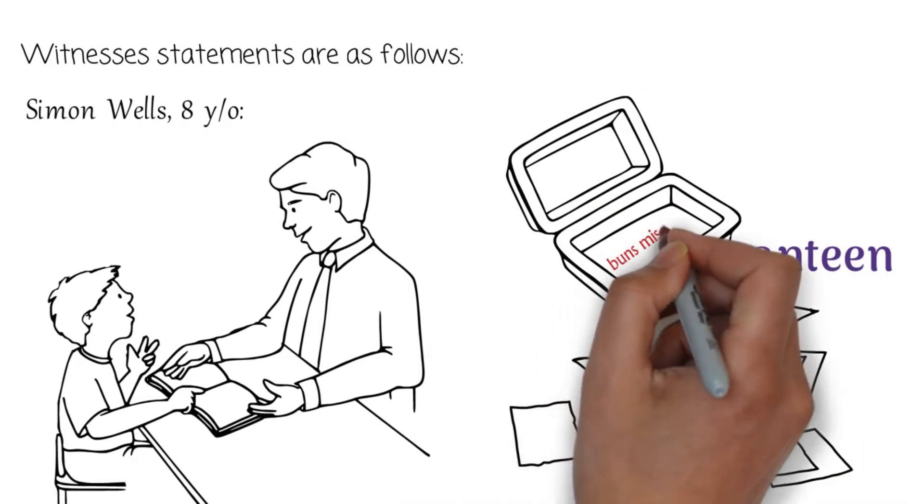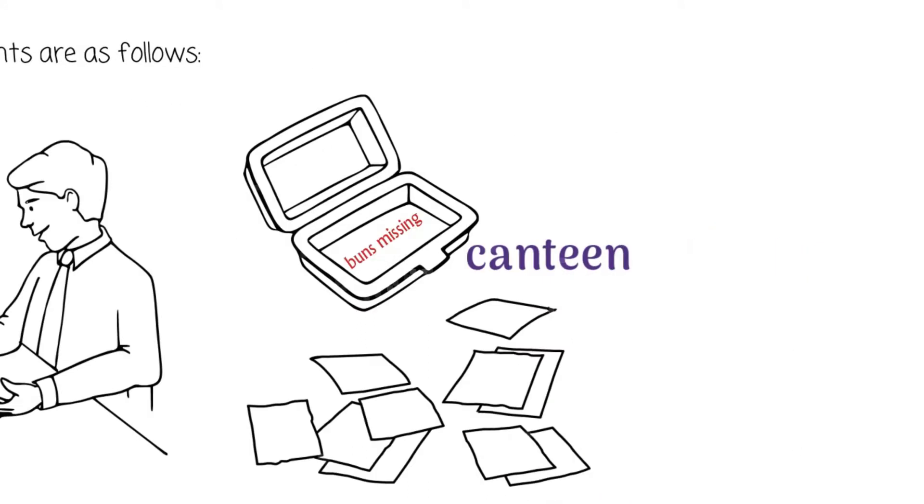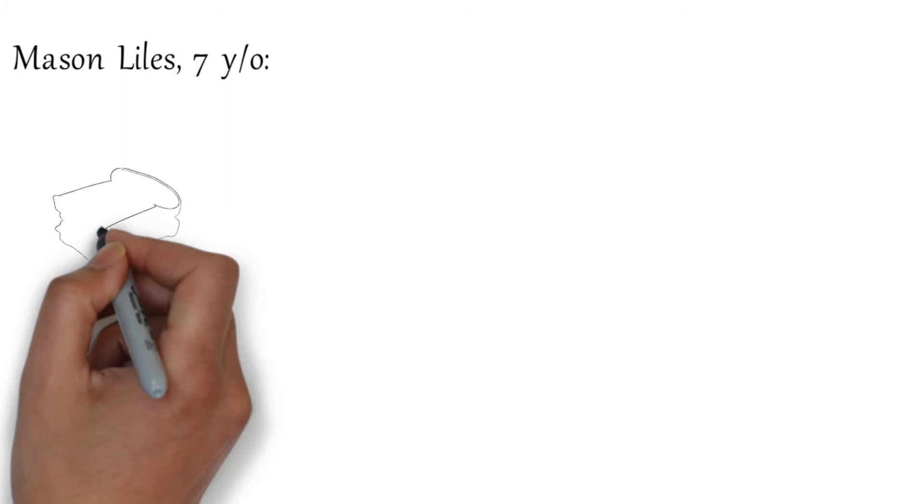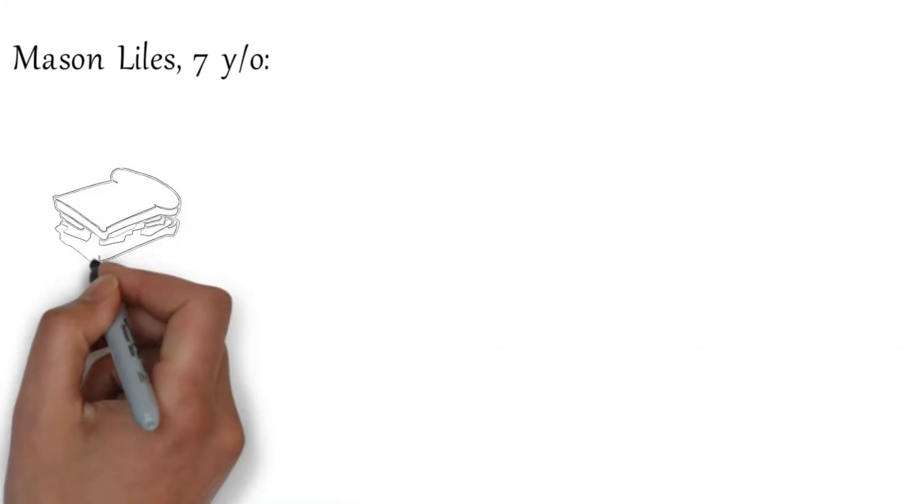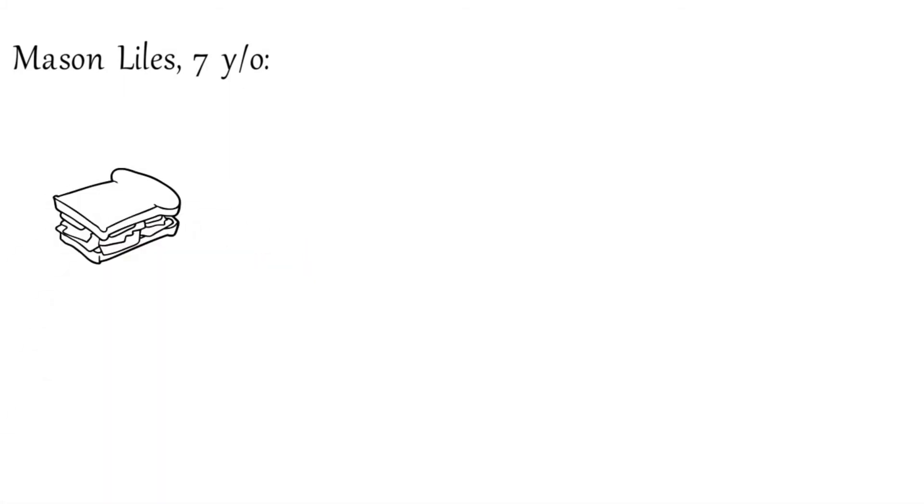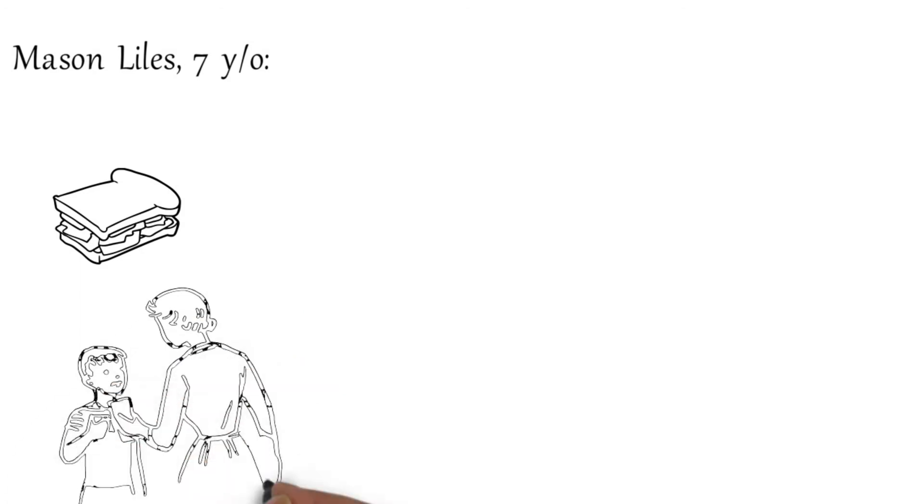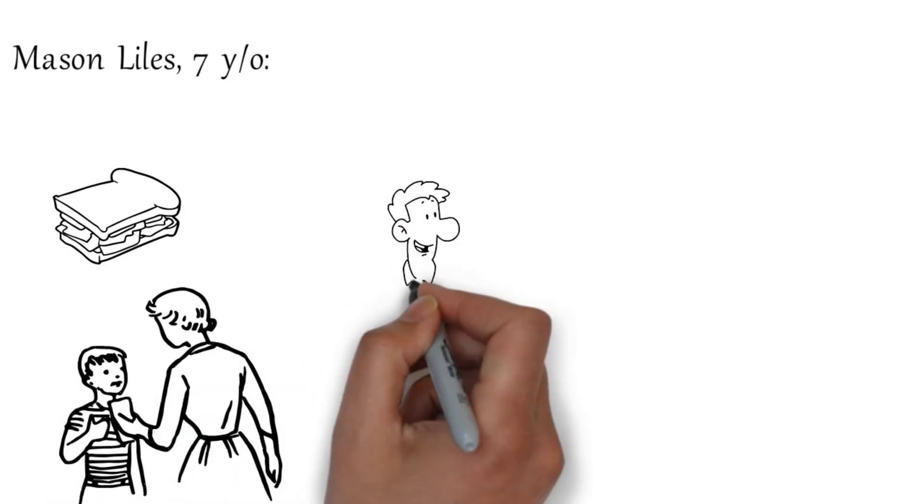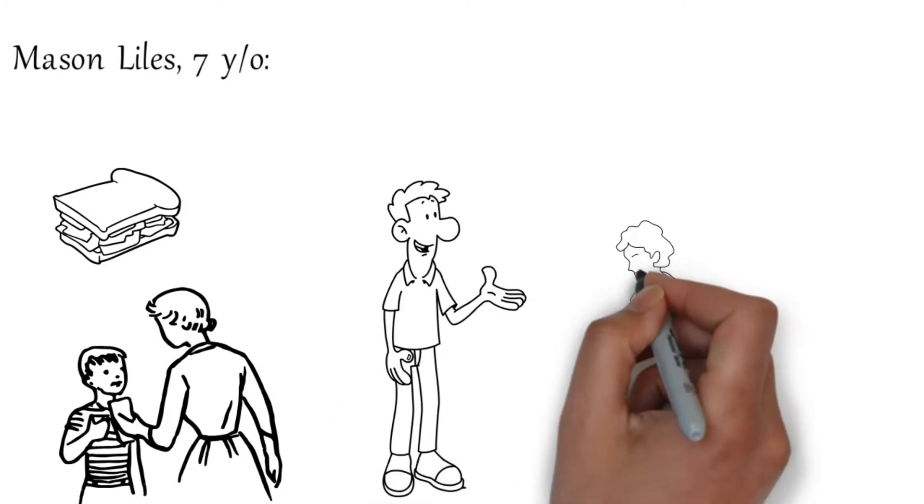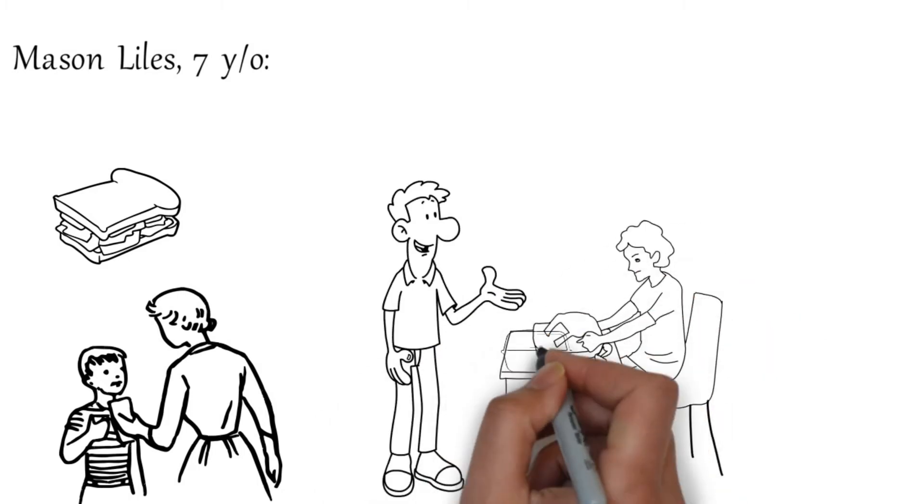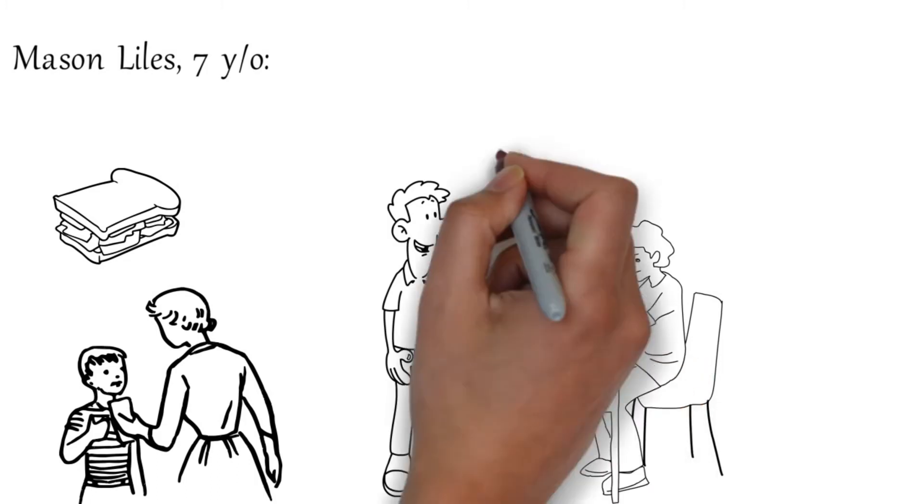It was then when I opened my lunch sack that I noticed my buns were missing. Mason Lyles, 7 years old: I picked up a Mars bar on my way to school. My mom packed me a ham and cheese sandwich but I didn't have any dessert, so she gave me some money to get something on my way to school. I put it in my desk while I was pulling out my homework to give to Mr. Burns. When I remembered to put it in my lunch sack, it was gone.